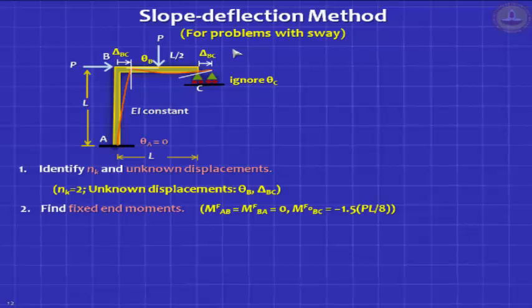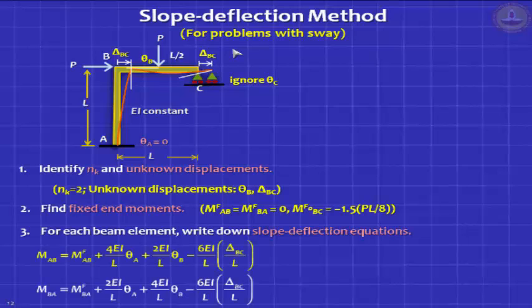Next step, write down the slope deflection equations for each element. There are 2 elements here, so for AB, you can write down, we have done this before. BC only one equation is needed, M FBC is M F naught BC plus 3 EI by L into theta B. There is no sway component in BC, please note, so most people will write the sway thing and then delete it, you do not need to do that. There is no sway here, and actually theta A also you can delete from here. So it simplifies, you have got your slope deflection equation.